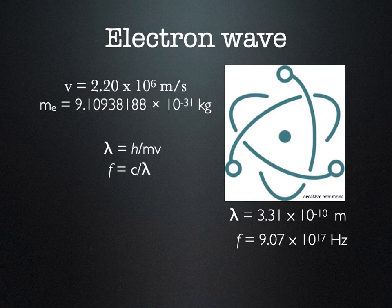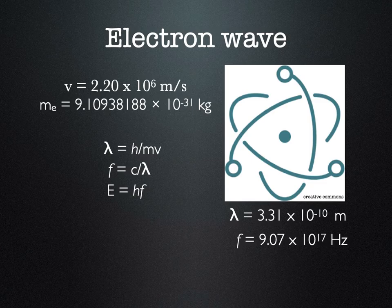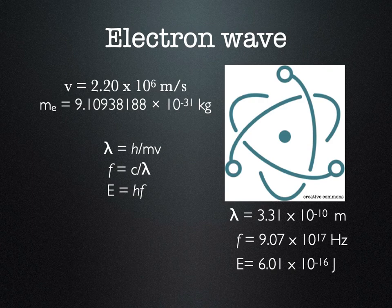Taking one more step using Einstein's photoelectric equation, we know that the energy of any photon of electromagnetic radiation is the frequency times Planck's constant. So if we take that frequency of 9.07 times 10 to the 17th hertz and multiply it by Planck's constant, we can find the energy for that electron. We should get 6.01 times 10 to the negative 16th joules. You should plug that into your calculator to confirm you get agreement.